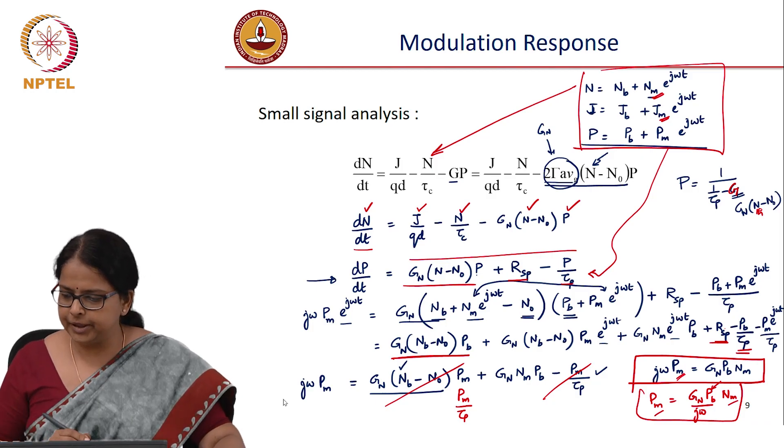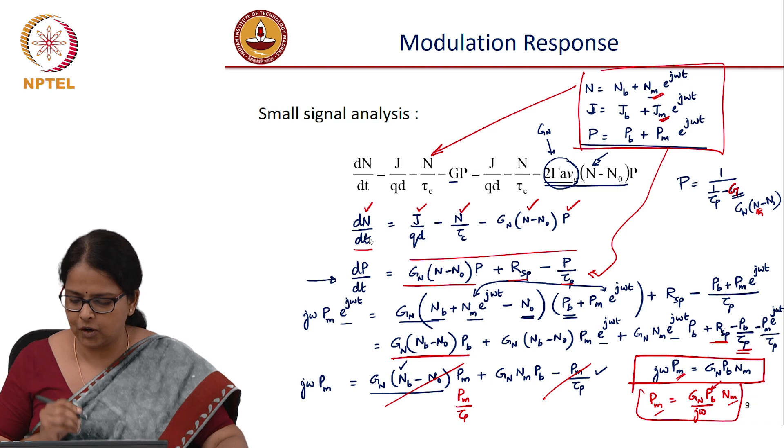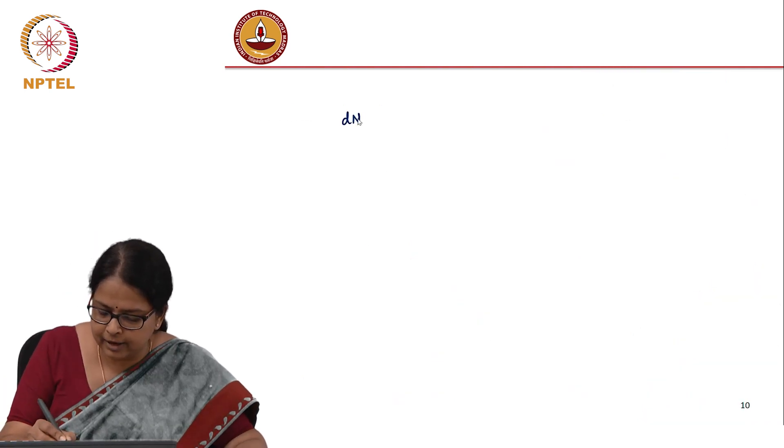Now we are going to substitute small signal modulation into the rate equation. So you have a carrier density equation.